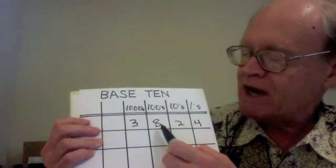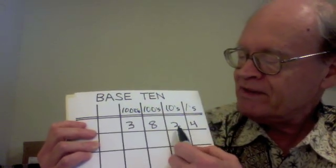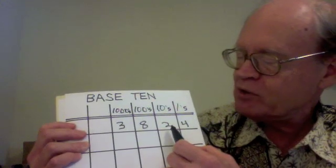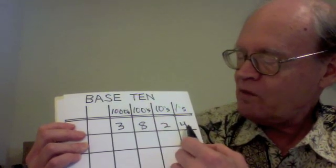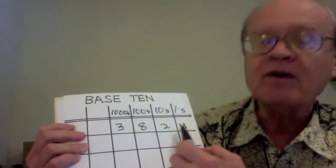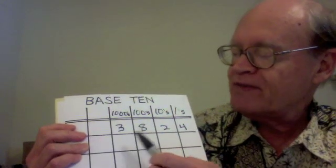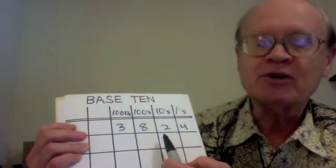The 8 means 8 times 100, which is 800. The 2 means 2 times 10, which is 20. And the 4 means 4 times 1, which is 4, for a total of 3,824.